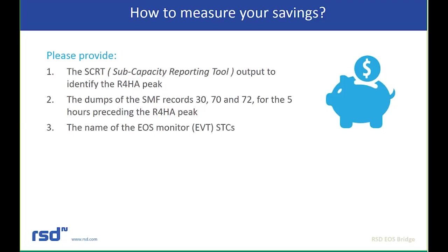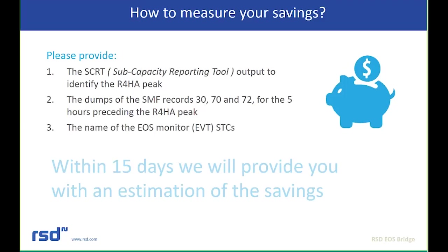The SMF records we're looking for are 30, 70, and 72, for the five hours preceding the R4HA peak. Those SMF records contain address space information, processor activity, and performance information. Along with the names of your EOS monitors — the EVTs and any started tasks producing those reports — you provide that to us, and within 15 days we will provide you with an estimation of the savings you can really realize from implementation of the Bridge.